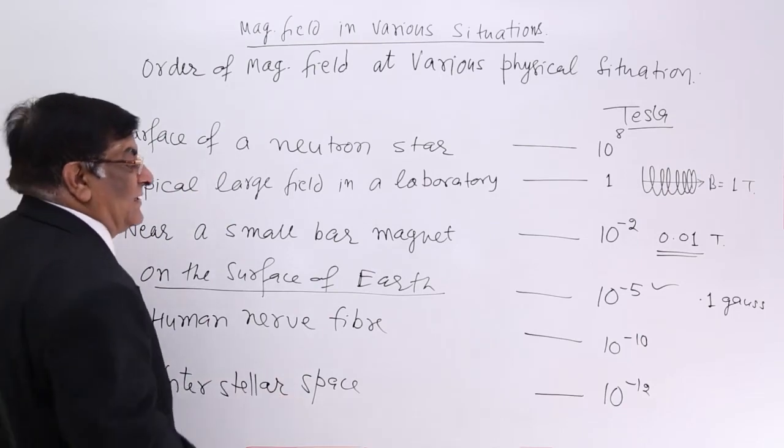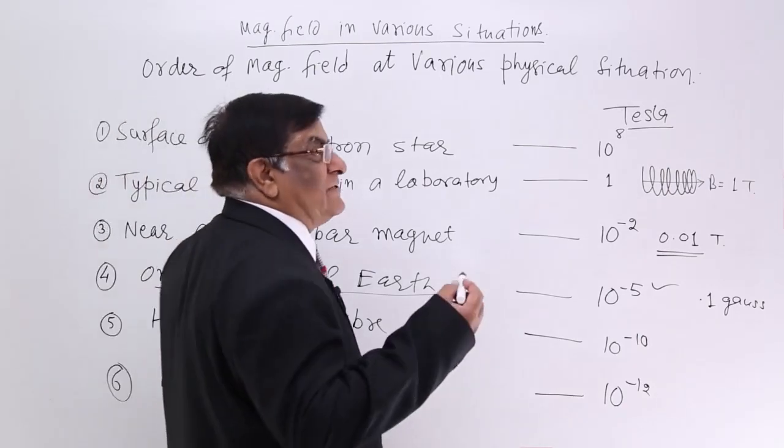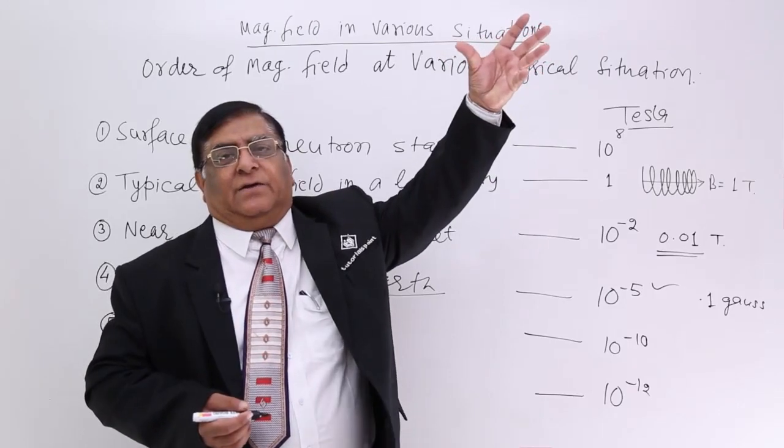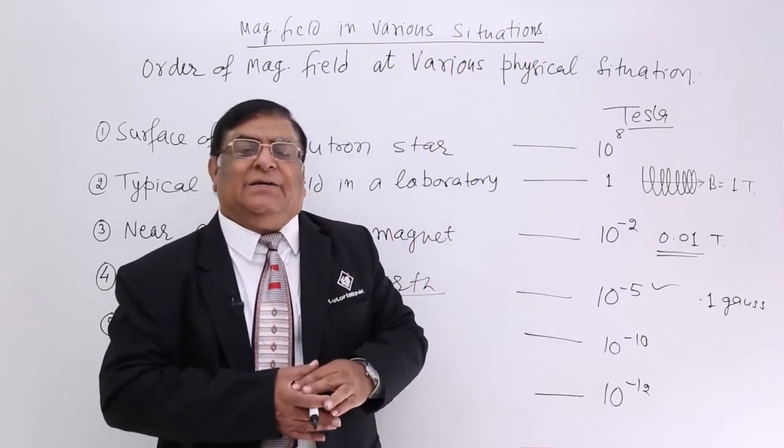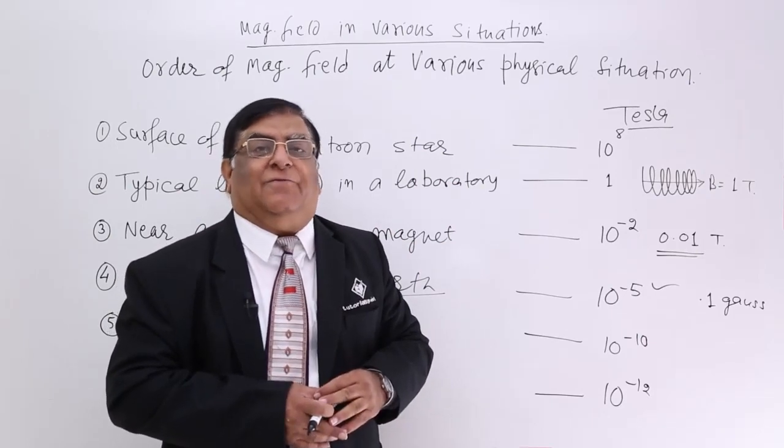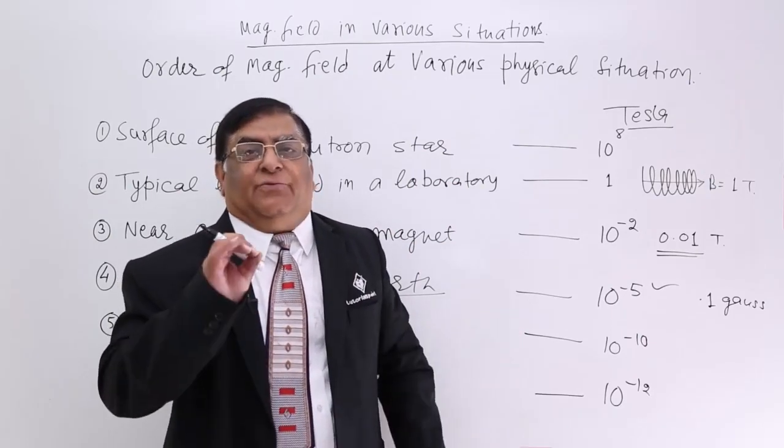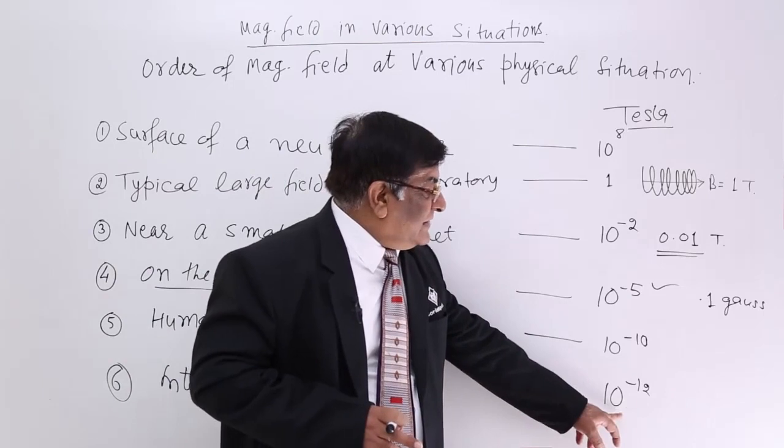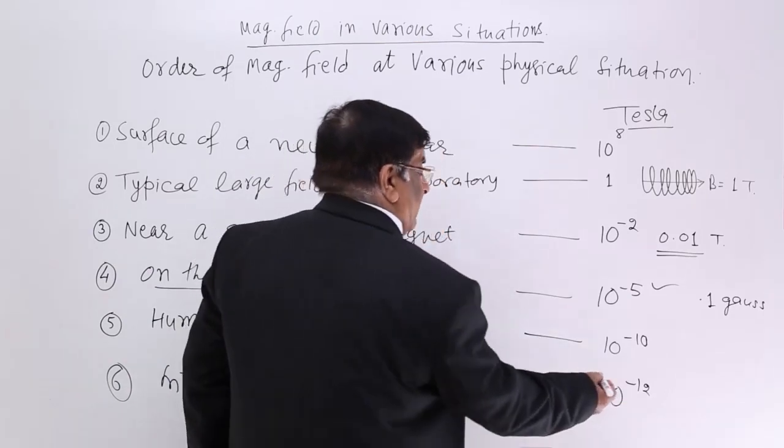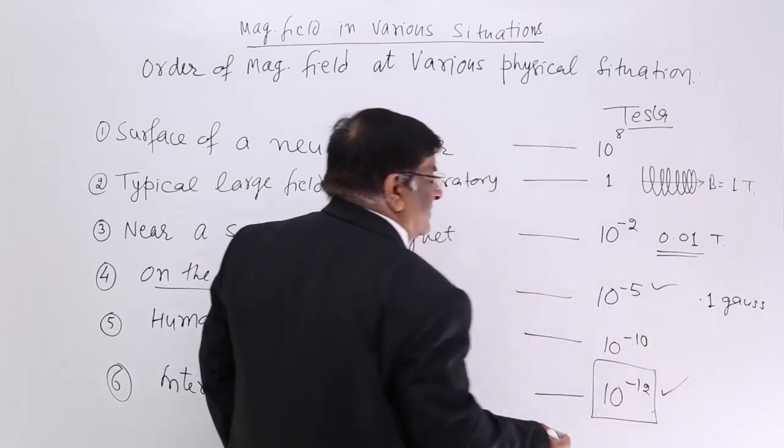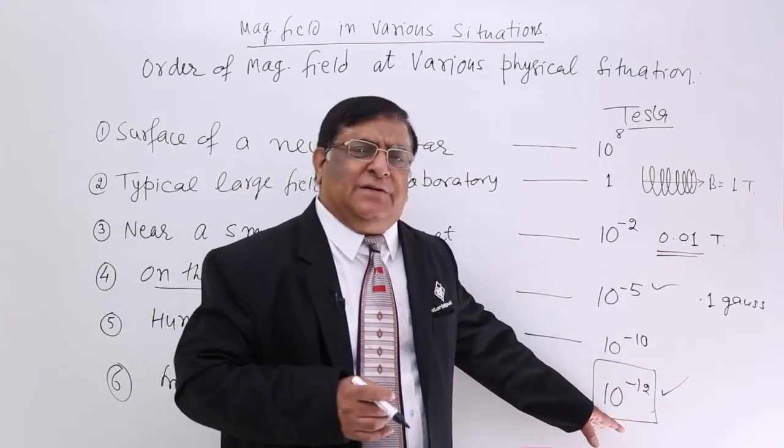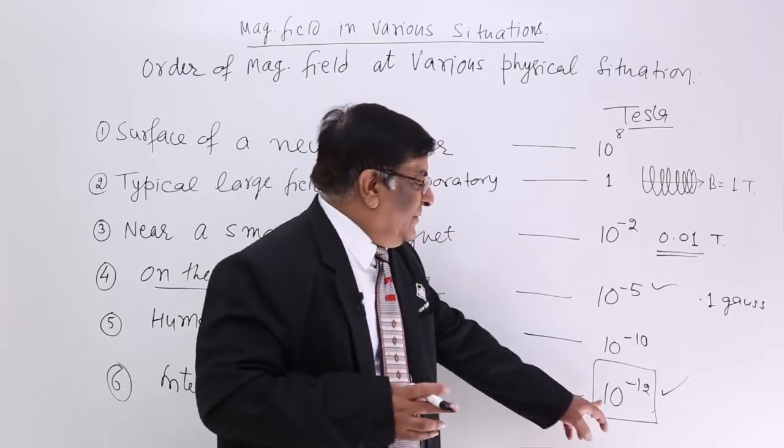Then interstellar space. That is space between one star to the other star - that is known as interstellar space. In that space the magnetic field is very, very weak, the weakest magnetic field - that is 10 to the power minus 12. This is the minimum, but still it is there. It is not zero. It is as good as zero, but not zero.